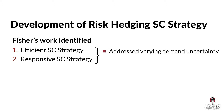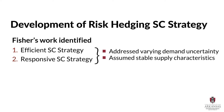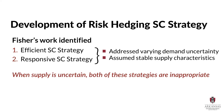These strategies work well under the right conditions, but they assume that supply characteristics are stable. Although that assumption holds true in many contexts, there are also times when supply is erratic, unpredictable, or uncertain. When supply is uncertain, efficient and responsive supply chain strategies are inappropriate.